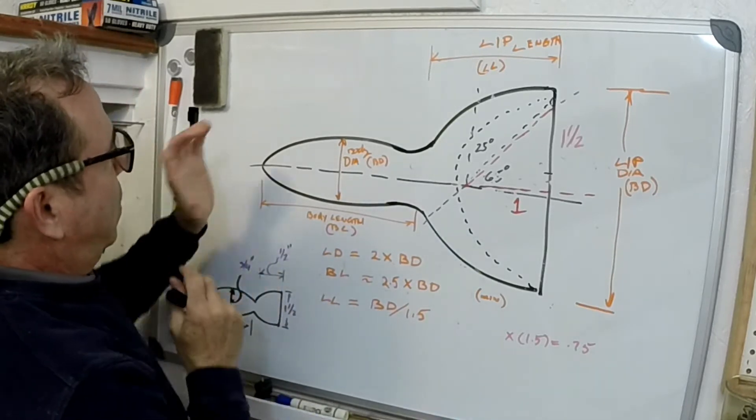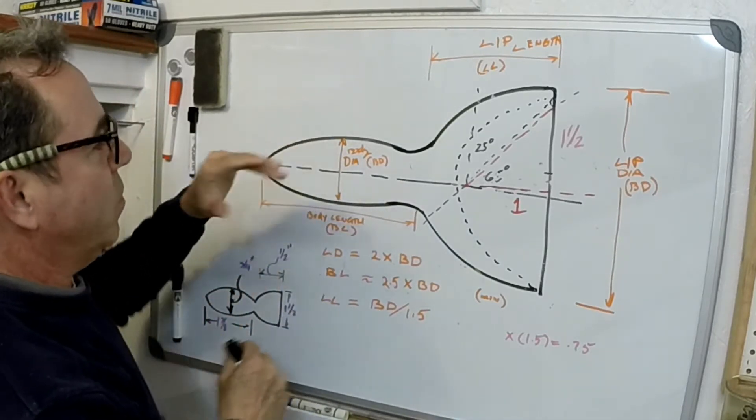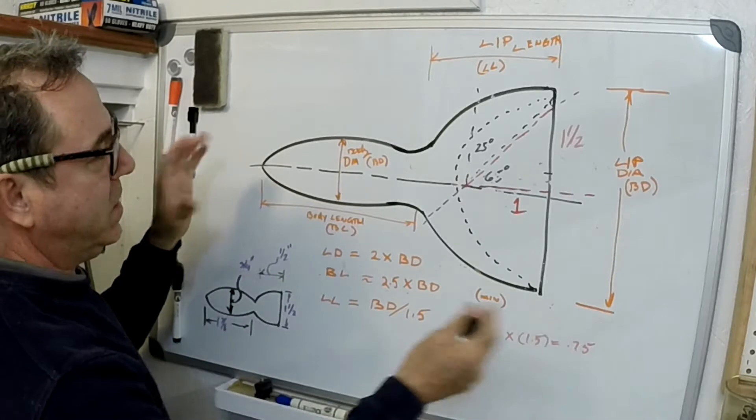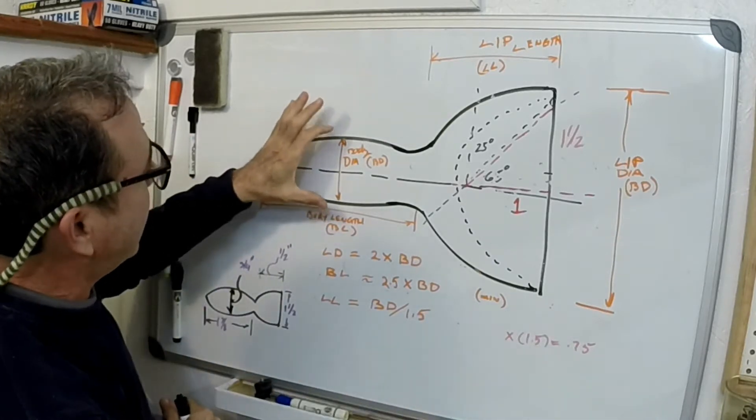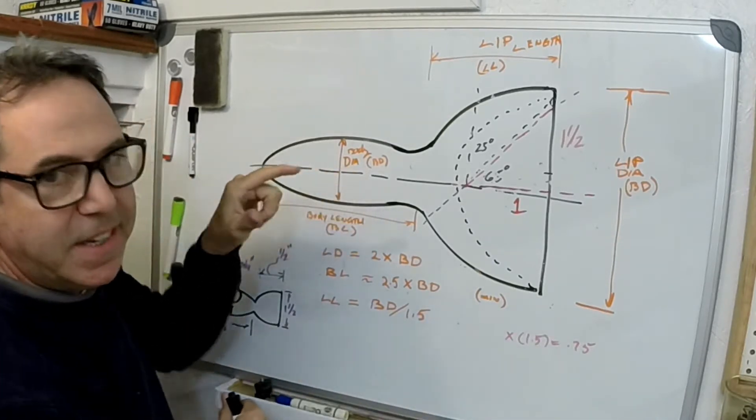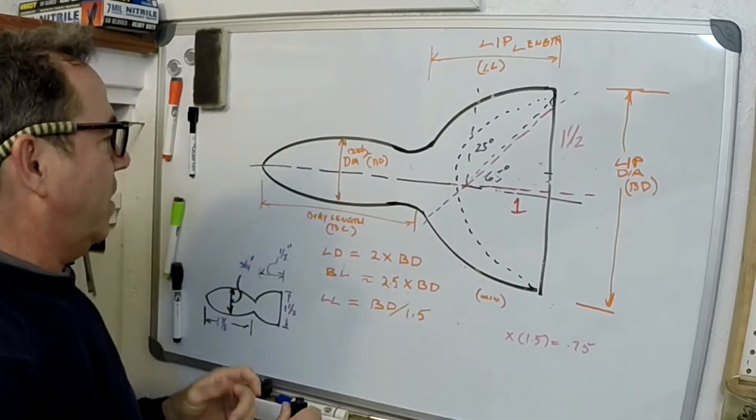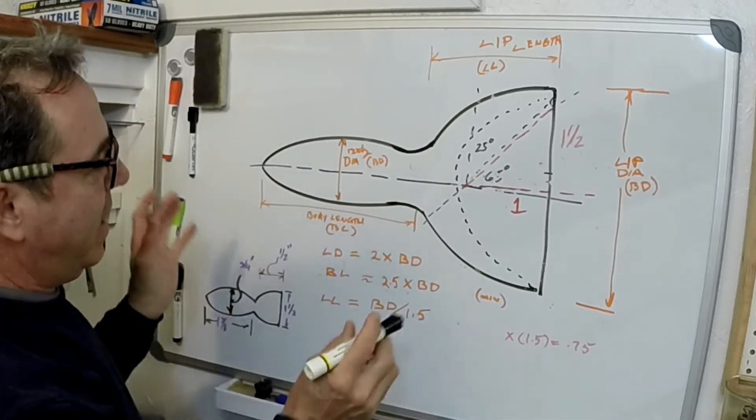What I start off with is the dimensions of the body and we're going to proportion everything off of that. The body diameter I'm going to call it BD. I know this is a little eggheady, a little bit geeky, but it helps later on for the calculation.